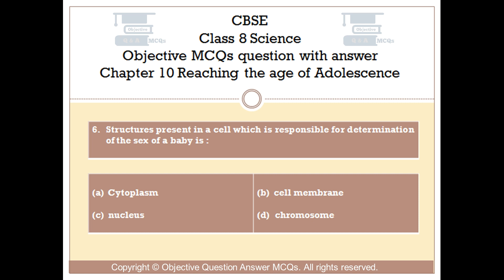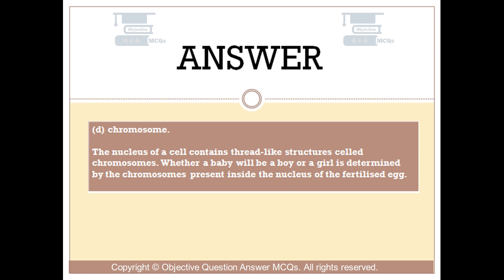The right answer is Option D: chromosome. The nucleus of a cell contains thread-like structures called chromosomes. Whether a baby will be a boy or a girl is determined by the chromosomes present inside the nucleus of the fertilized egg.